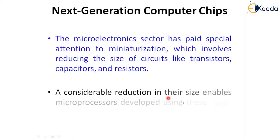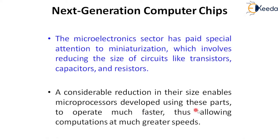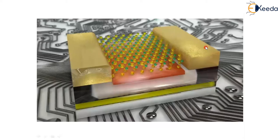A considerable reduction in size enables microprocessors to operate using these components. One more advantage is that if you make products with nanomaterials they will work faster, allowing computations at much greater speed. That is the biggest advantage of placing nanomaterials in next generation computer chips.